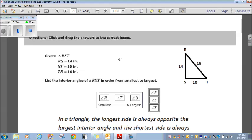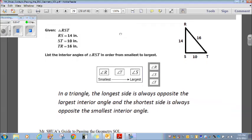So, directions click and drag the answers to the correct boxes. Given triangle RST, RS is 14 inches, ST is 10 inches, TR is 16 inches. I went ahead and drew a diagram and labeled it over here for effect. Okay. List the interior angles of triangle RST in order from smallest to largest. And just like I mentioned previously, in a triangle, the longest side is always opposite the largest interior angle. And the shortest side is always opposite the smallest. So, the smallest is 10. That's opposite angle R. So, angle R is the smallest.